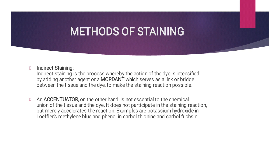Indirect staining is the process where the action of the dye is intensified by adding another agent — a mordant — which serves as a link or bridge between the tissue and the dye to make the staining reaction possible. In indirect staining, the stain may only weakly, if at all, combine with tissue on its own. Instead, the mordant combines with a dye to form a colored lake, which then combines with the tissue to form a tissue-mordant-dye complex that is rendered insoluble in ordinary aqueous solution.